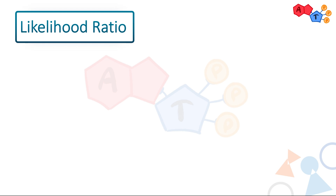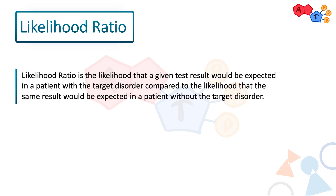If you look up its definition, you'll probably be left more confused because it's a mouthful. Likelihood ratio is the likelihood that a given test result would be expected in a patient with the target disorder compared to the likelihood that the same result would be expected in a patient without the target disorder. For example, if we have a test that detects iron deficiency anemia and the positive likelihood ratio is 20, that means the person who just got the positive is 20 times more likely to have iron deficiency than someone who does not have the disease. We're always comparing to someone who does not have the disease.